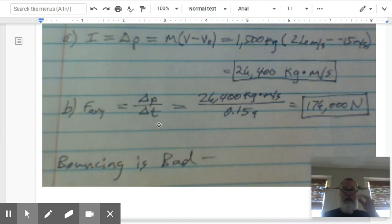Now, relating that to the average force of impact, force of impact equals change in momentum divided by time. So we take the number we just calculated divided by 0.15, and we end up with 176,000 newtons.